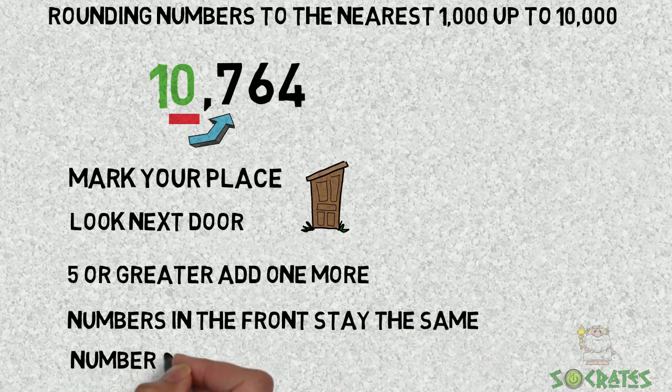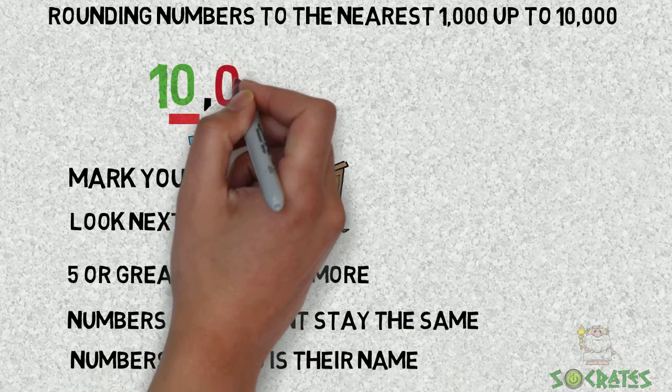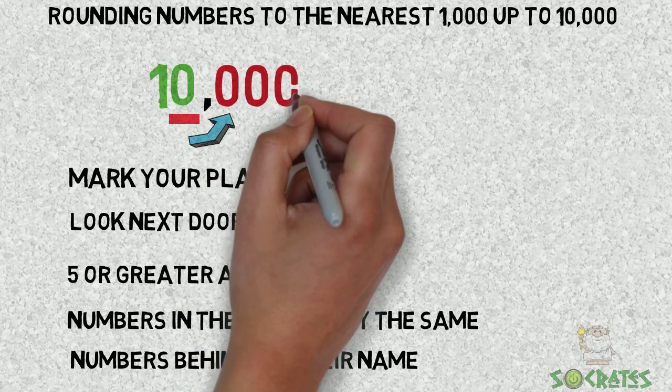Numbers in the front, there are none in this example. And numbers behind, zero is their name. So the answer is ten thousand.